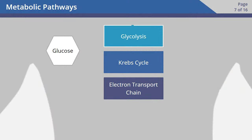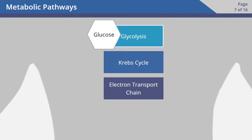Glycolysis is the first step in digestion to turn food into energy. In this example, let's drag a glucose molecule to the first metabolic pathway, glycolysis, that's used in aerobic organisms.